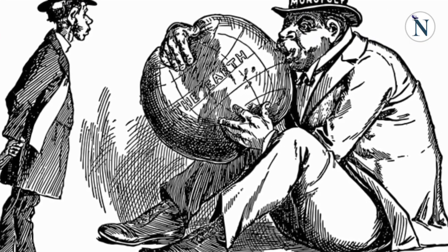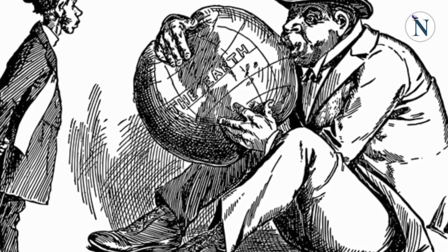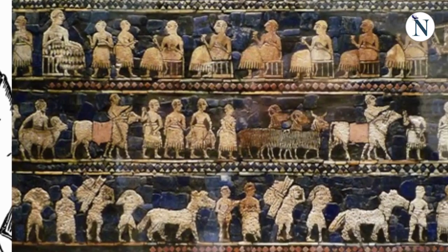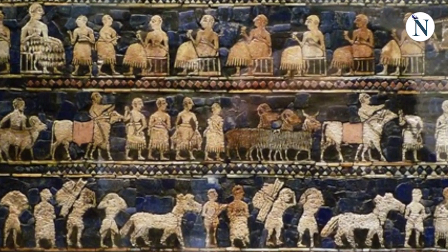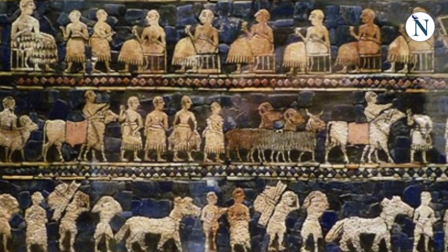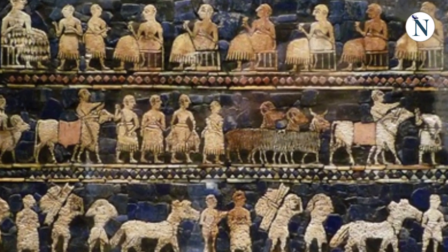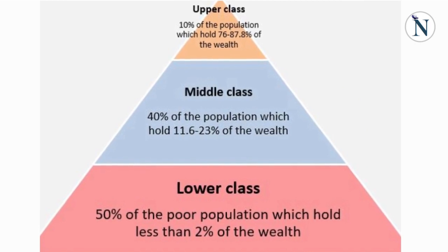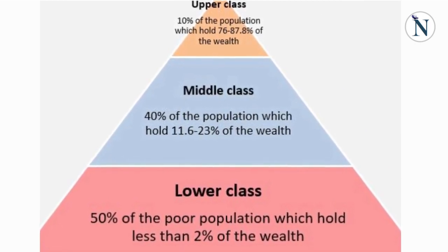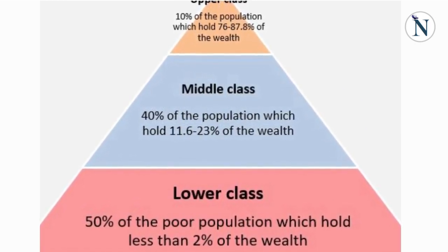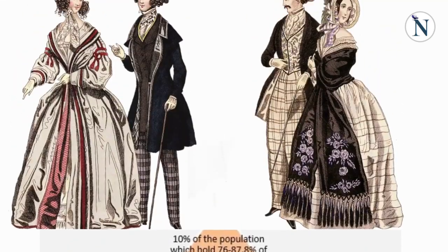One of the key factors that contribute to social stratification is social class. Social class refers to a group of people who share a similar economic and social position in society. In most societies, there are three main social classes: the upper class, the middle class, and the lower class.